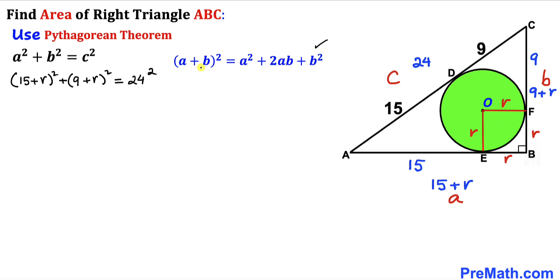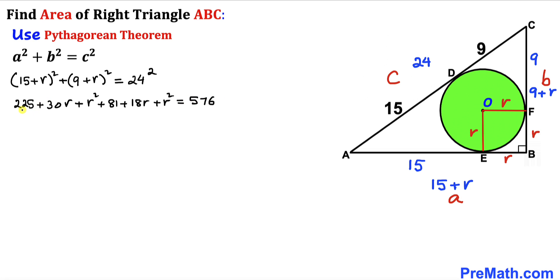Expanding using the identity (a + b)² = a² + 2ab + b²: (15 + r)² gives 225 + 30r + r², and (9 + r)² gives 81 + 18r + r², equal to 576 on the right. Combining like terms: 225 + 81 = 306, and 30r + 18r = 48r, giving 306 + 48r + 2r² = 576.